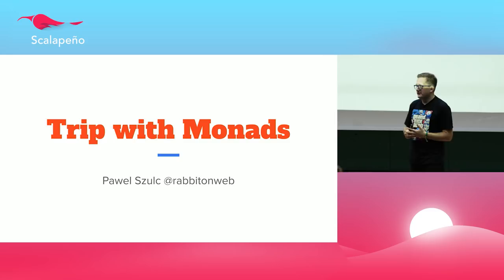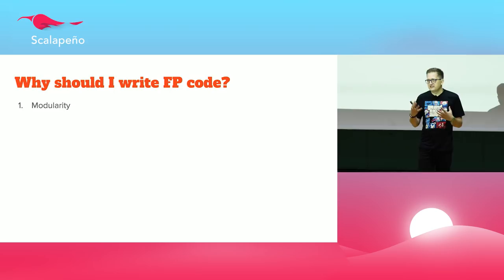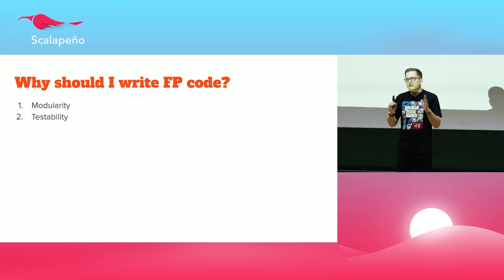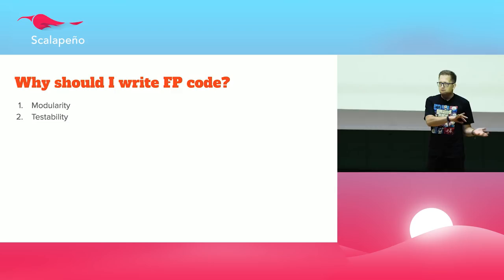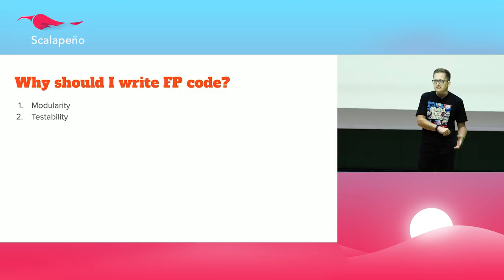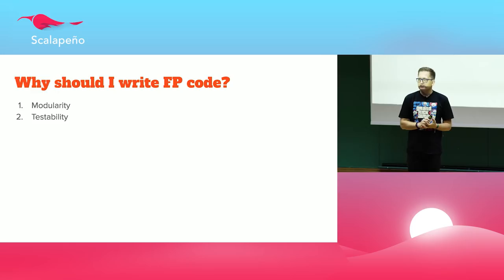Functional programming is great because you get modularity. If you have functions which only return values, it's really easy to write modular software. It's also testable — if your function just transforms a given input to output, writing a test is very easy. But if your function has internal effects beyond transforming input to output, you need mocks and extra libraries. Switch all those effects into values and that problem disappears.